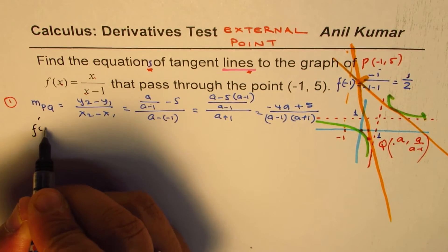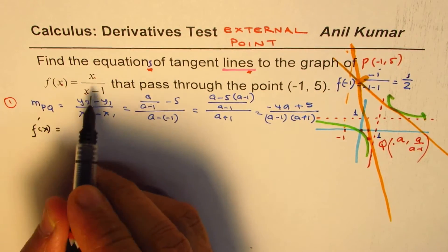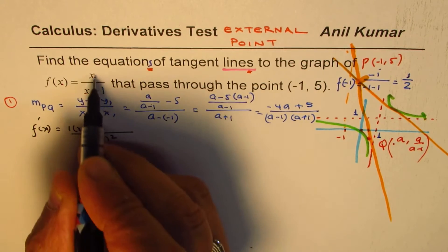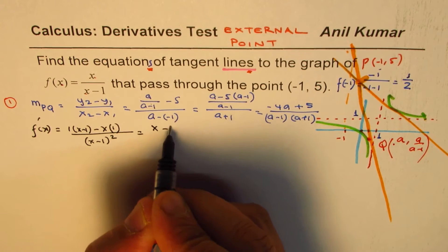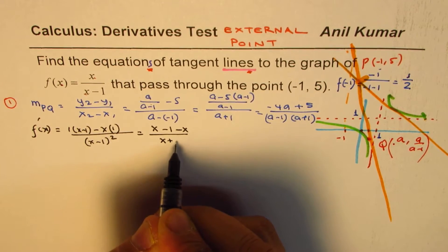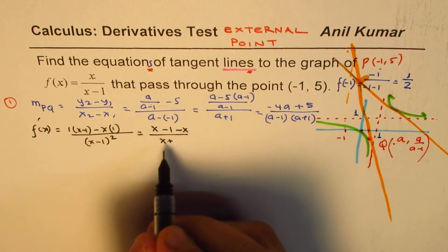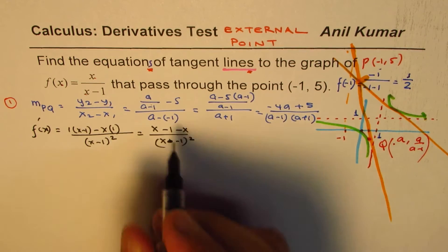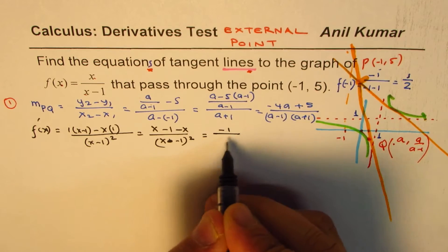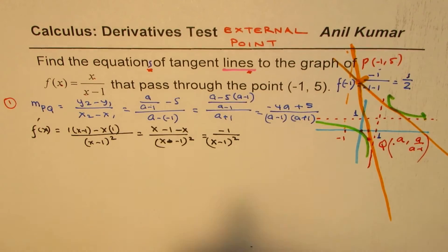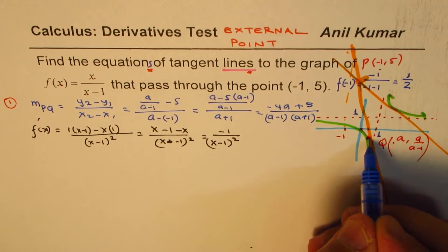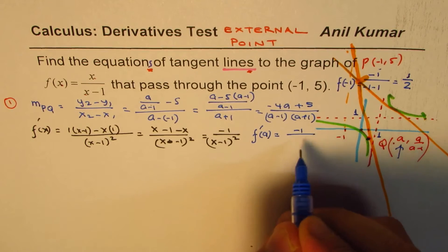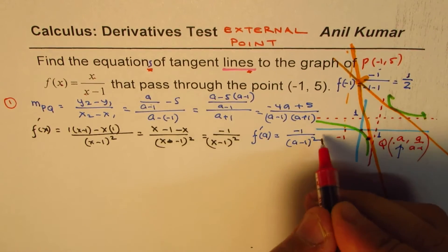We can also find the slope by taking the derivative of the function. Applying the quotient rule: f'(x) = [(1)(x-1) - x(1)] / (x-1)², which simplifies to (x - 1 - x) / (x-1)² = -1 / (x-1)². So the derivative at point a is f'(a) = -1 / (a-1)².